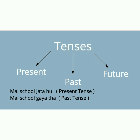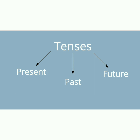اسی tense کو ہم past میں convert کریں گے: 'میں school گیا تھا۔' یہ past tense ہو گیا کیونکہ کام ہو چکا ہے۔ Third — 'میں school جاؤں گا۔' یہ future type آگیا کیونکہ آپ school جاؤ گے — گا، گی، گے — یہ ہوتے ہیں ہمارے۔